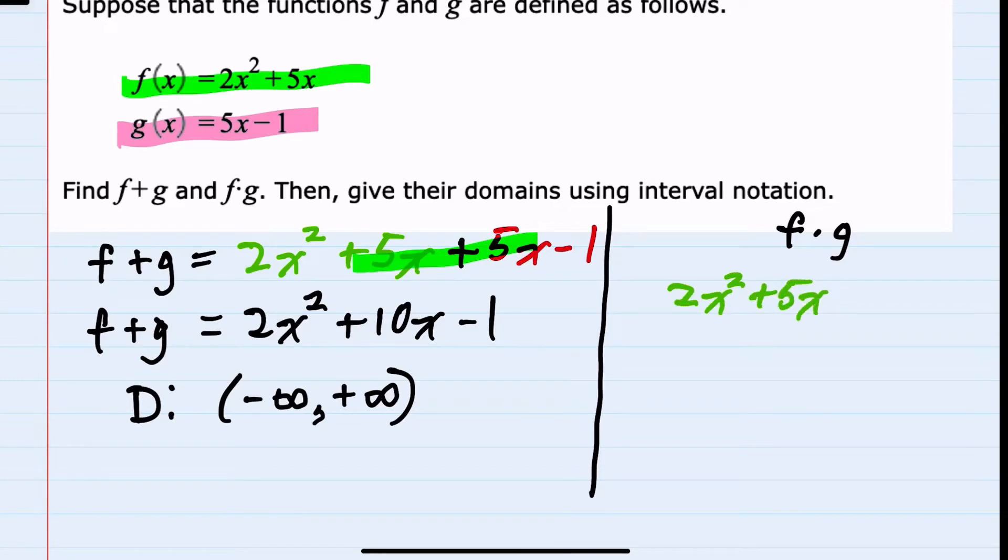since we are going to multiply this with g, I'm going to put it in parentheses, and then I'll also copy down the g function in parentheses. So 5x minus 1.